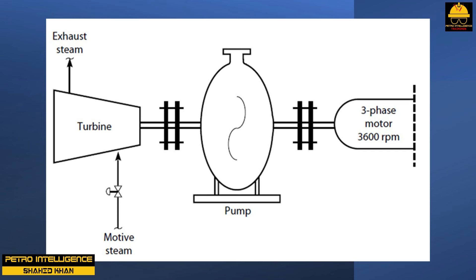But suppose the amp load on the motor drops to zero by gradually increasing the steam to the turbine, and then we increase the motive steam by another notch. Will the pump, motor, and turbine — all coupled together and hence running at the same speed — now run faster? The answer is no. What happens to the increment of shaft work generated by the turbine? This extra shaft work will be converted to electrical power — the three-phase motor will turn into an electrical power generator and begin to export electricity into the grid.